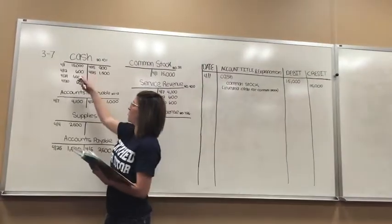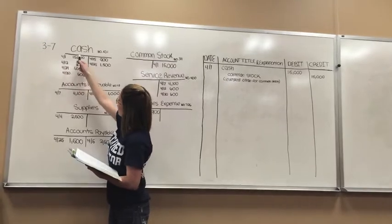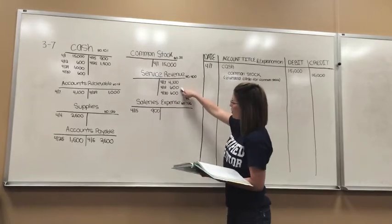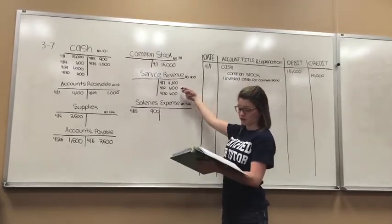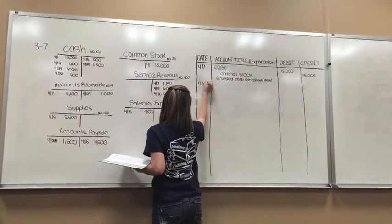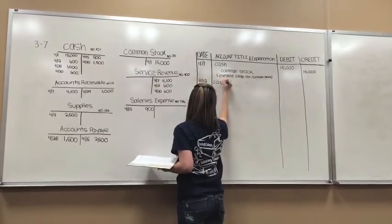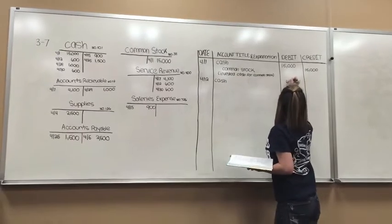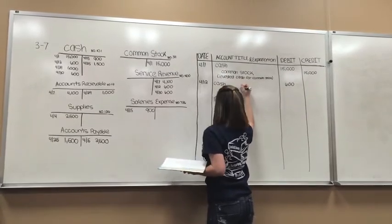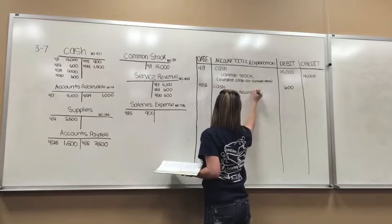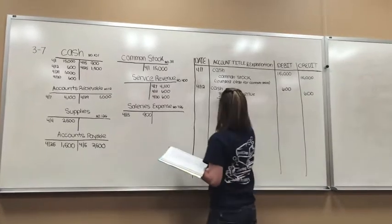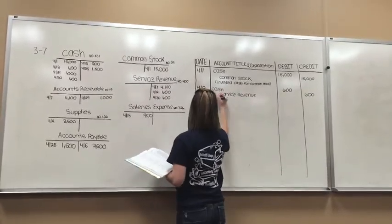Now we're going to look at our next entry, which is on 4.12. That was a debit for $600 for cash, and we see on 4.12 there was a credit under service revenue for $600. So we're going to write 4.12 with a debit of cash for $600 and a credit to service revenue for $600. The explanation for that is: received cash for service revenue.